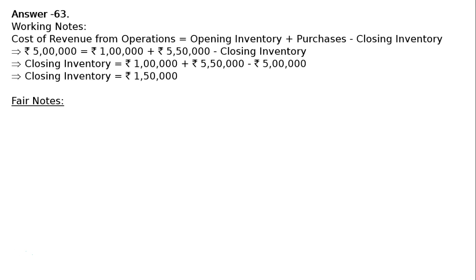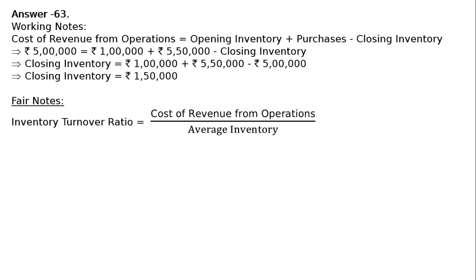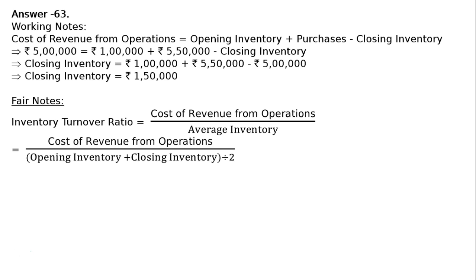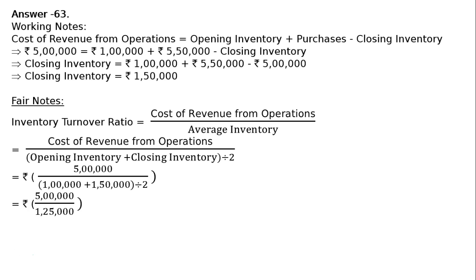Now for the main formula: inventory turnover ratio equals cost of revenue from operations divided by average inventory. Average inventory equals opening inventory plus closing inventory divided by 2. That is Rs. 5 lakh divided by (Rs. 1 lakh plus Rs. 1 lakh 50,000) divided by 2, which equals Rs. 5 lakh divided by Rs. 1 lakh 25,000, giving us 4 times.